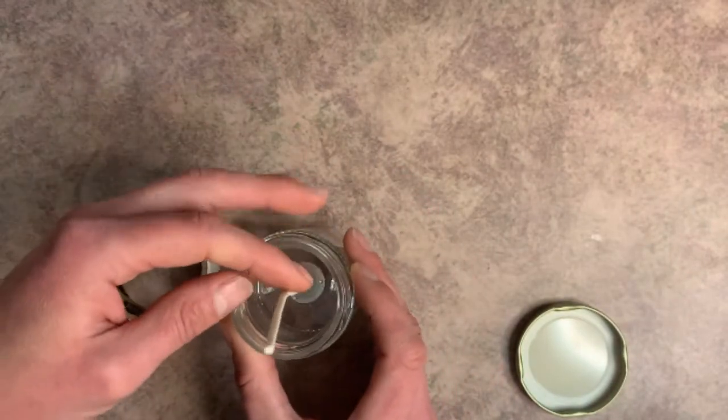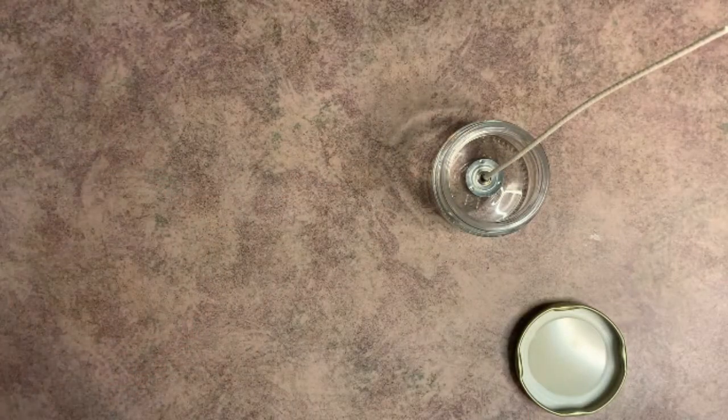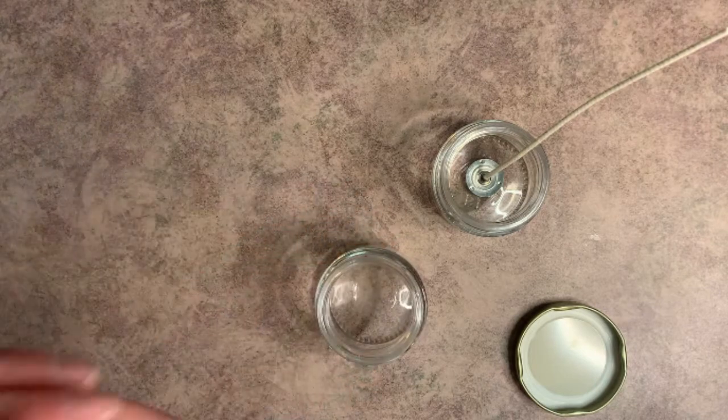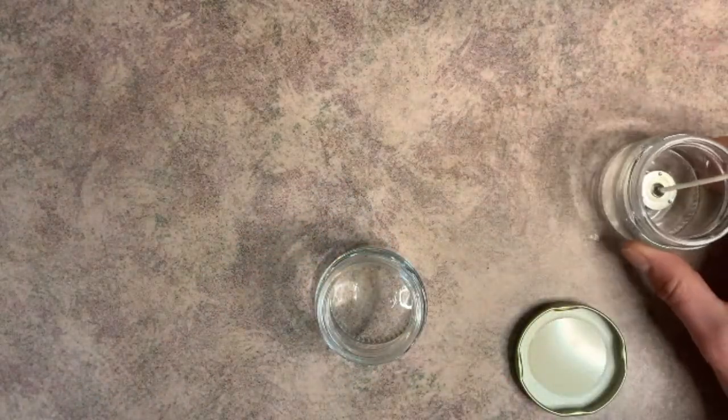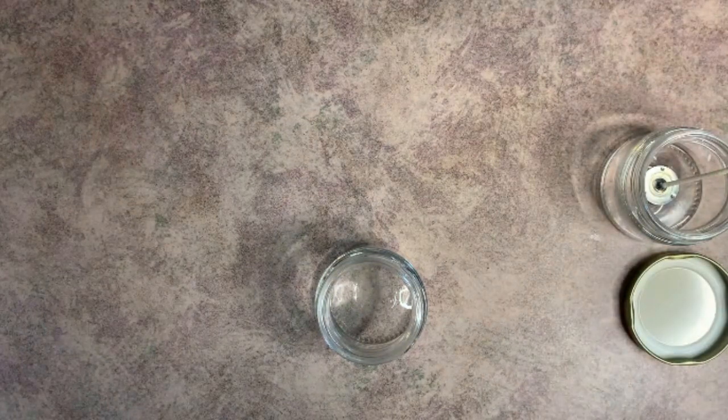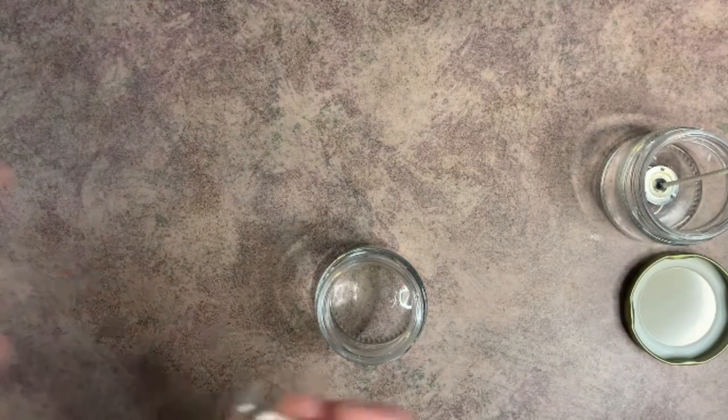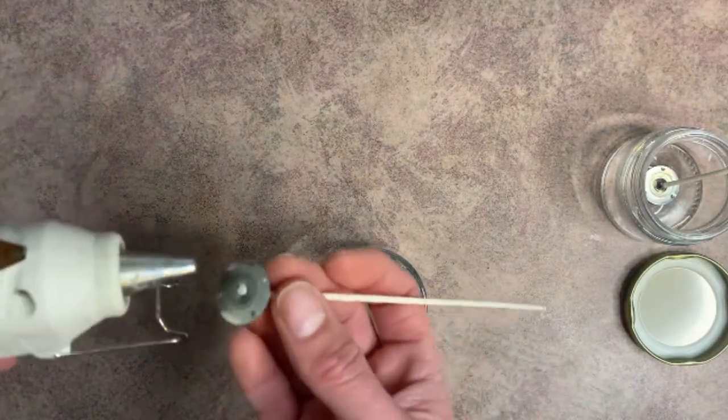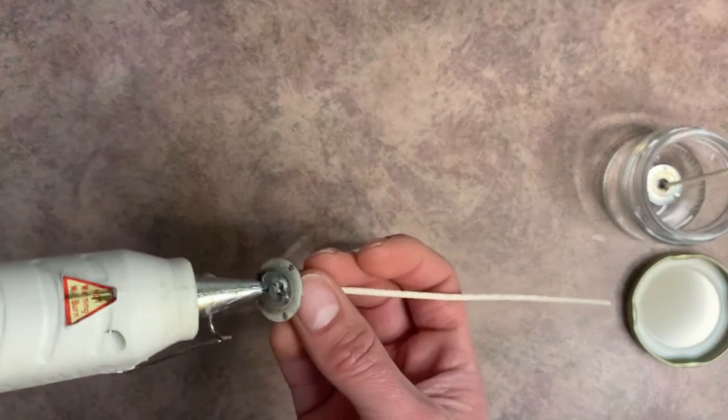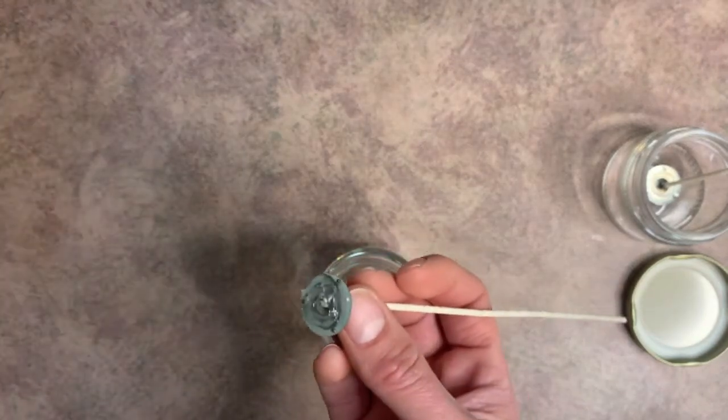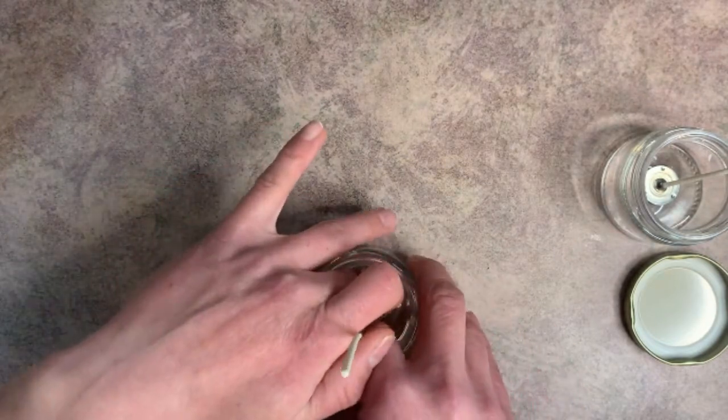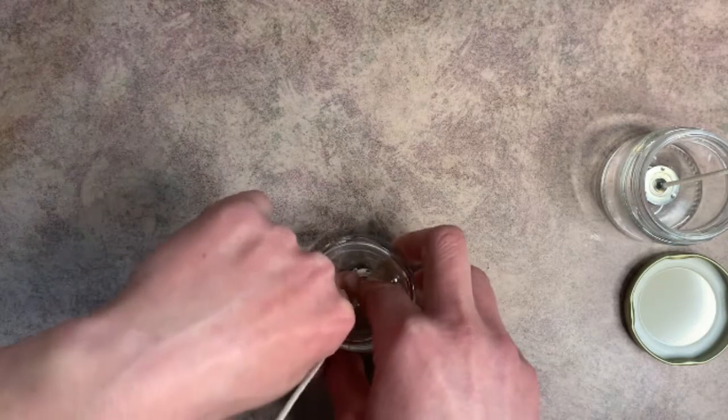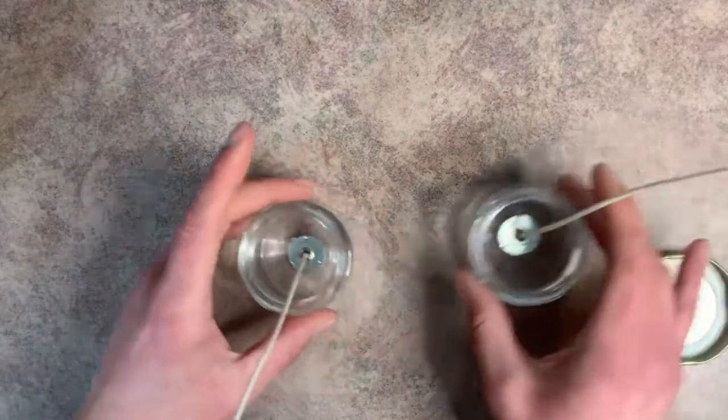And then to place a wick with a hot glue gun, you're going to do basically the same thing. You're just going to take the hot glue gun, put a little bit of hot glue on the bottom of the tab, and push it down in the center of your candle.